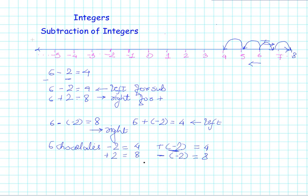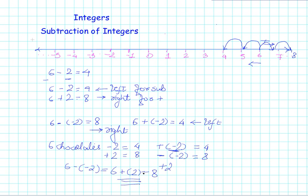This can be understood one more way: the additive inverse of minus 2 is plus 2. So when I compute 6 minus minus 2, I am taking the additive inverse of negative 2, which is positive 2, and adding it to 6. That gives me 8.